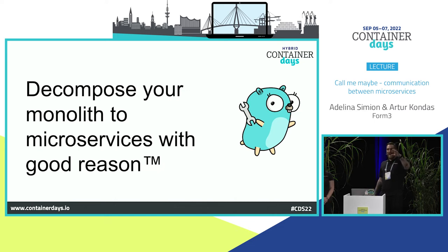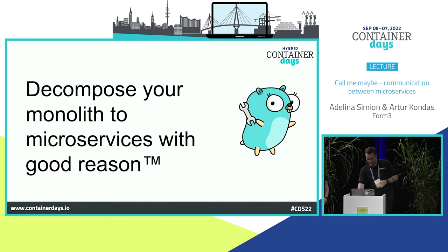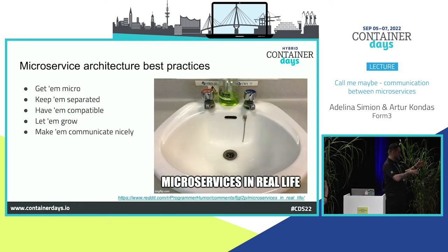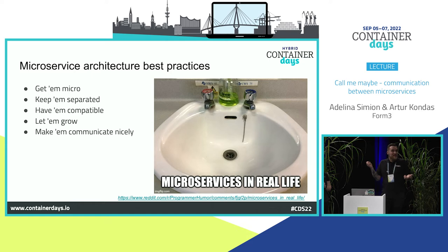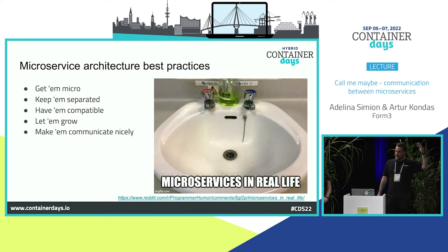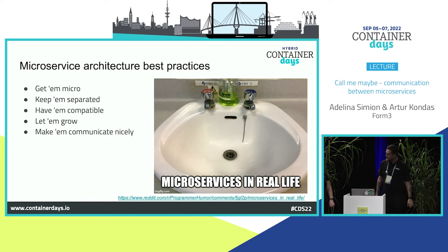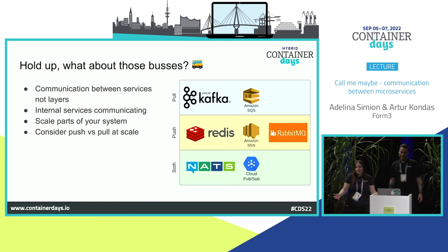When decomposing the monolith, have a good reason — not all monoliths are bad. With microservices: get a micro — if a microservice does more than one thing, is it really micro? Keep them separated so each microservice does one thing. Have them compatible, think about plug-and-play infrastructure. Dockerize them, containerize them, Kubernetes them. Make them communicate nicely — think about how your communication will look in a month, a year, ten years. Don't make overhead where you don't have to.